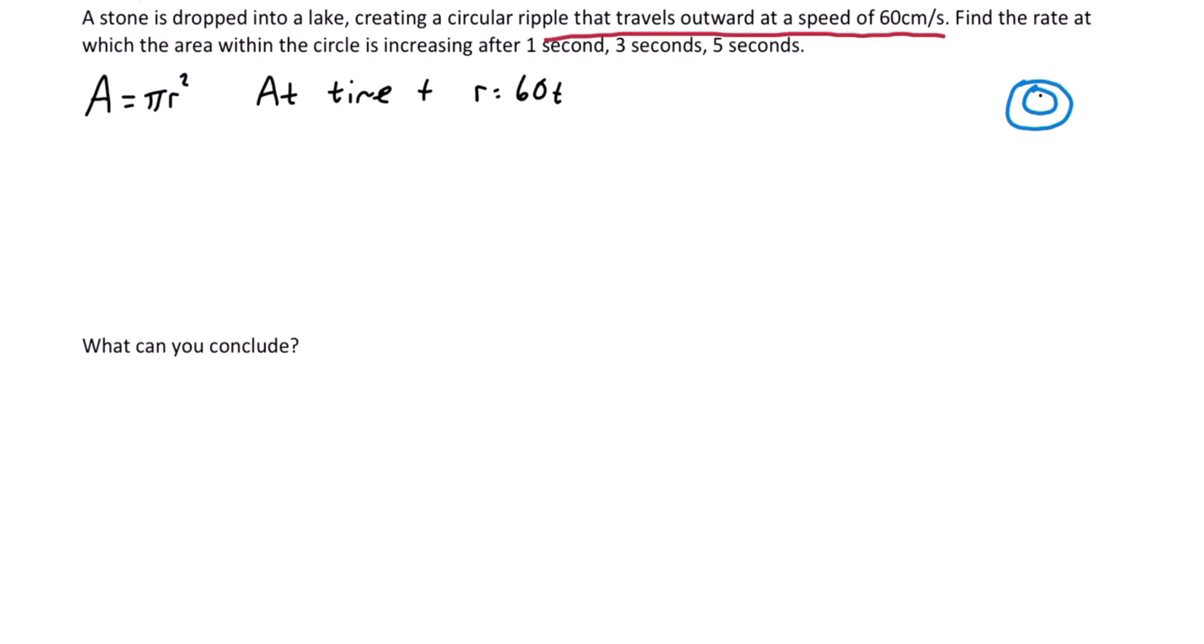So let's replace r with 60t. Area is pi times 60t squared. That'll give us 3,600 pi t squared for the area at any given time t.